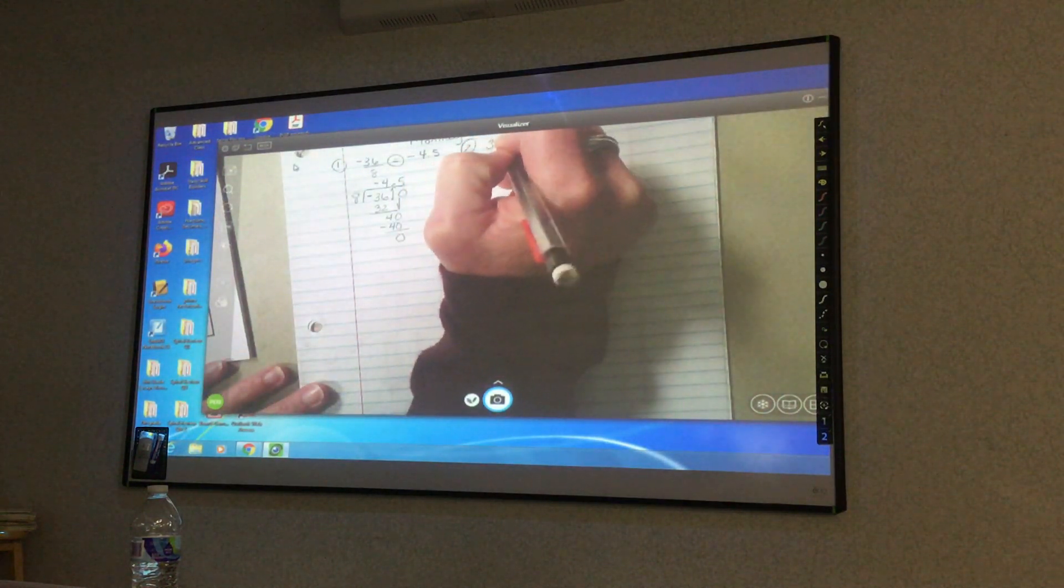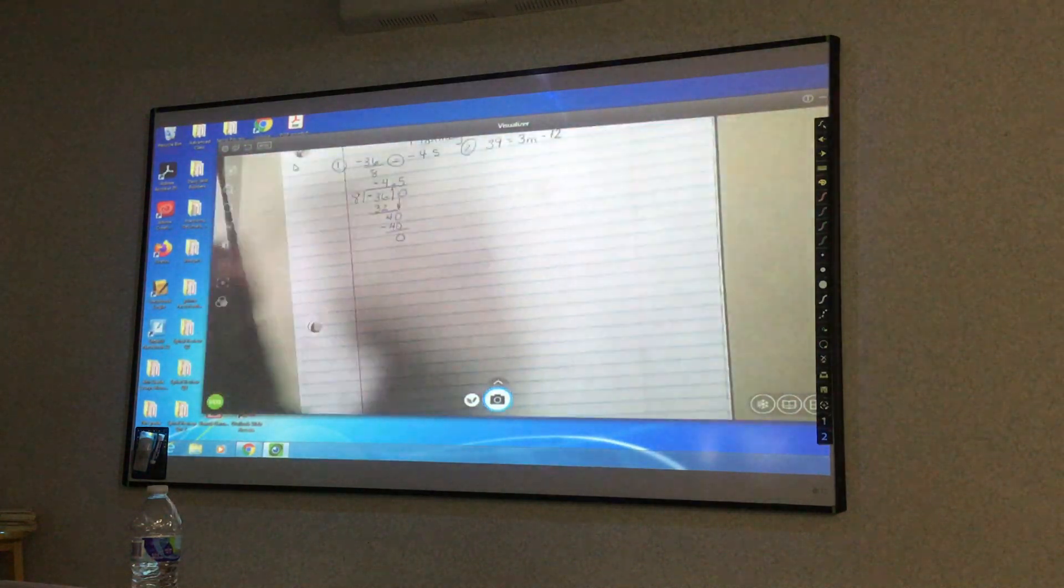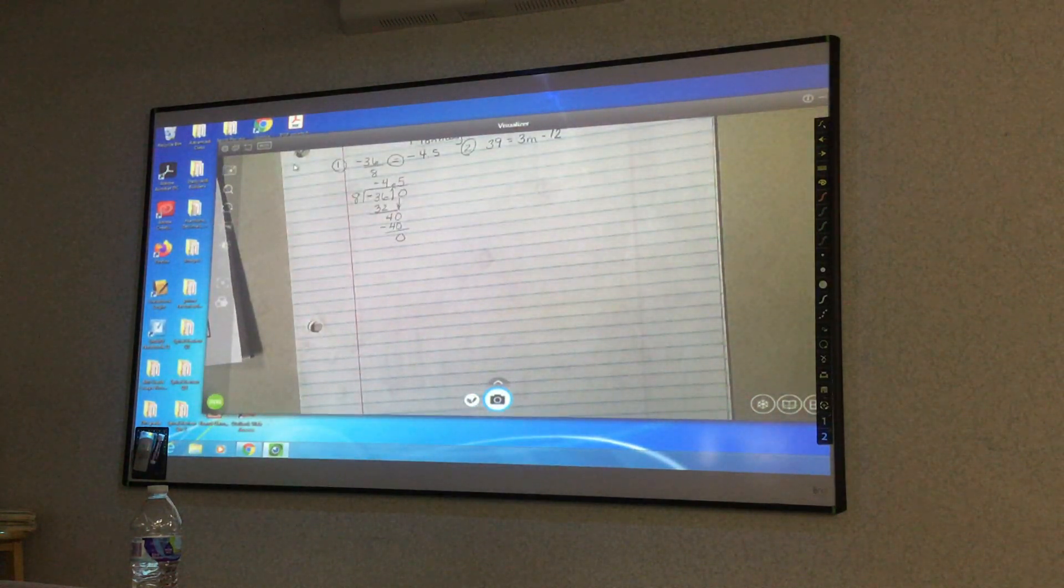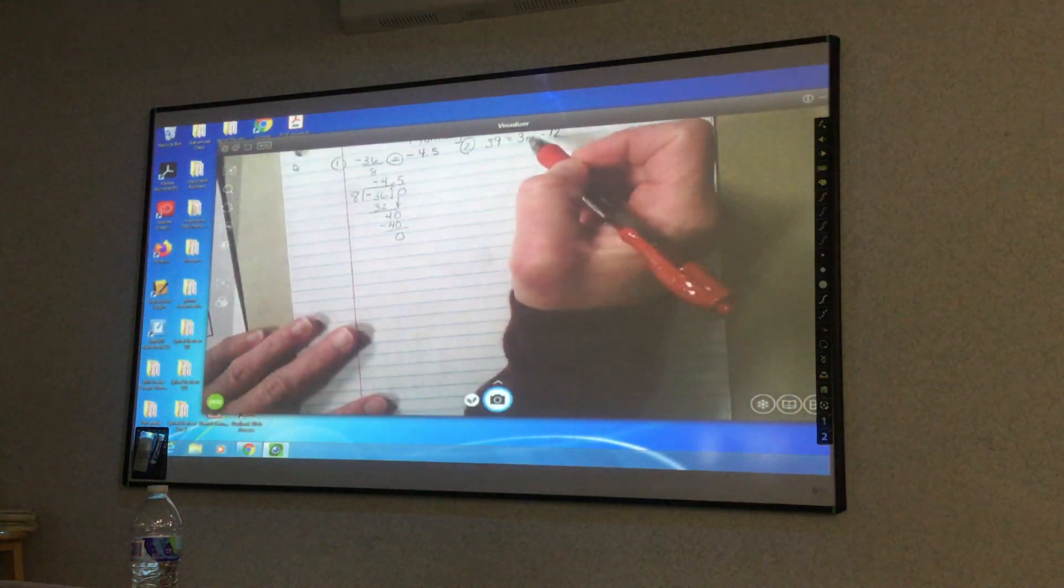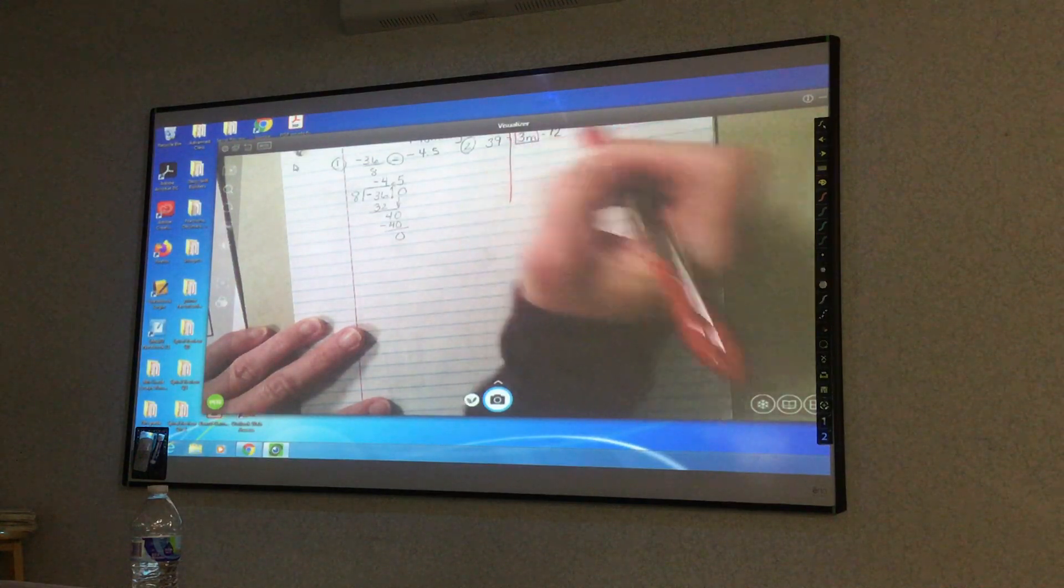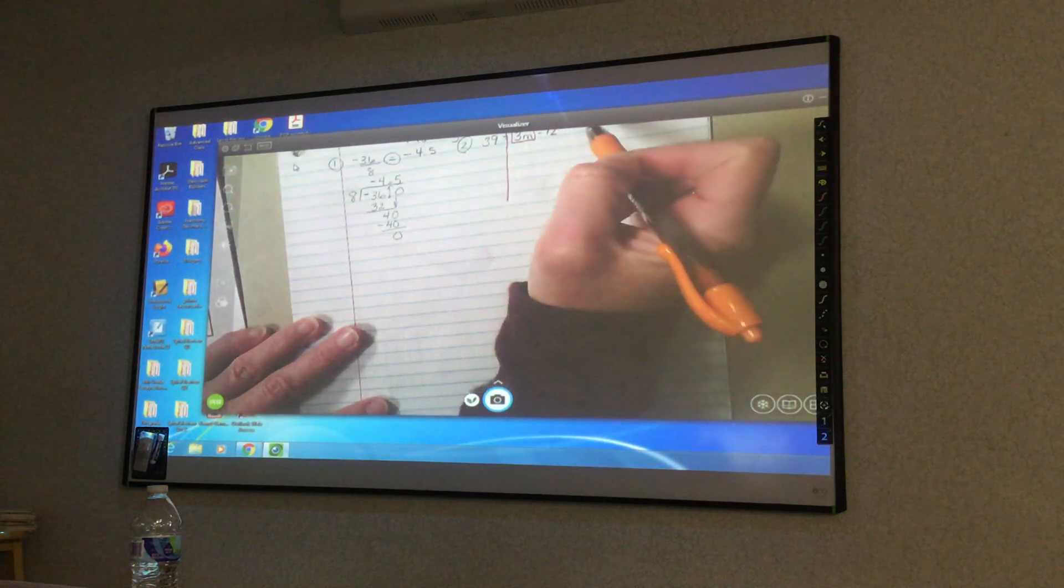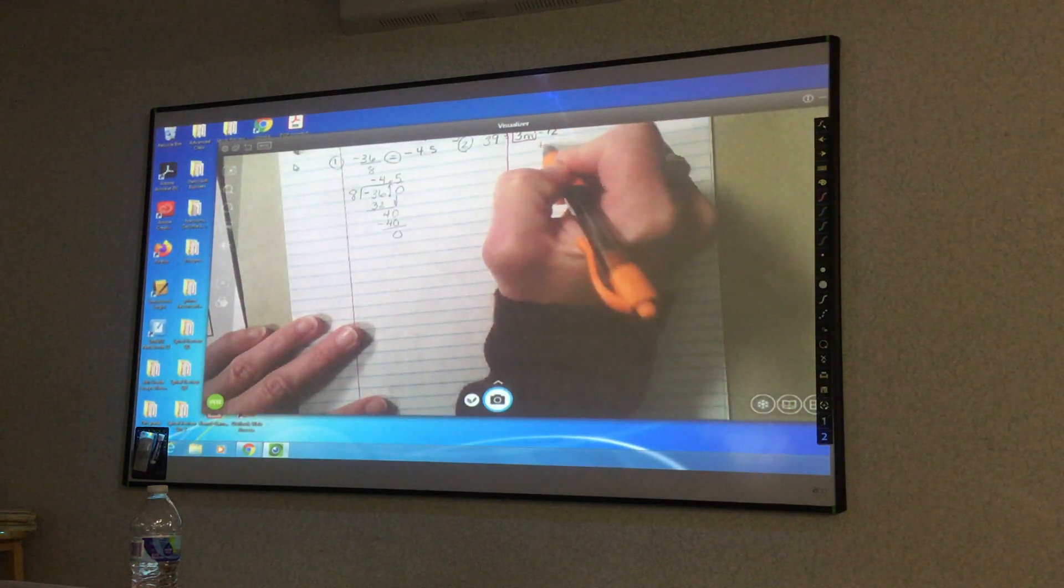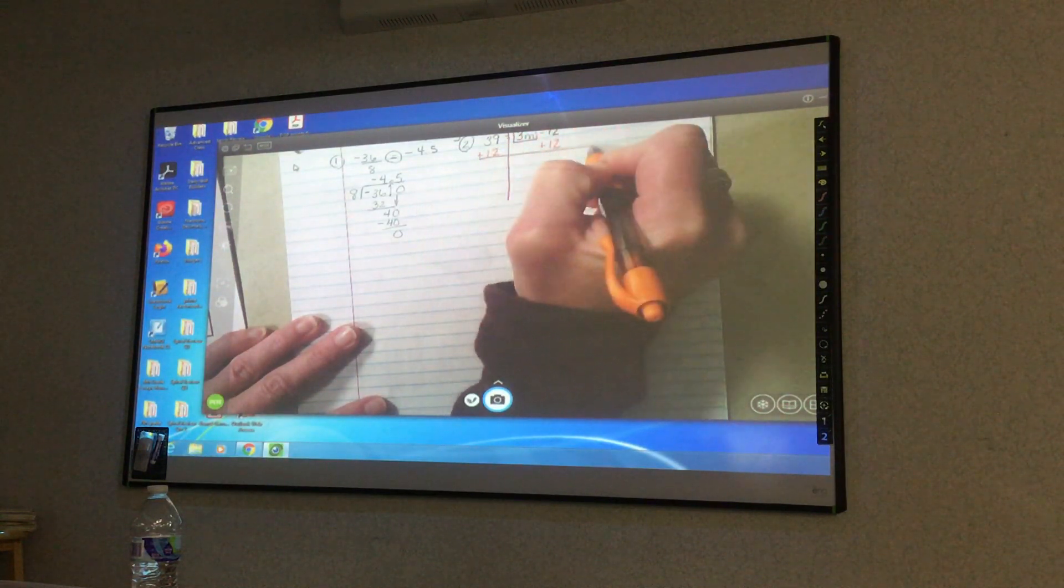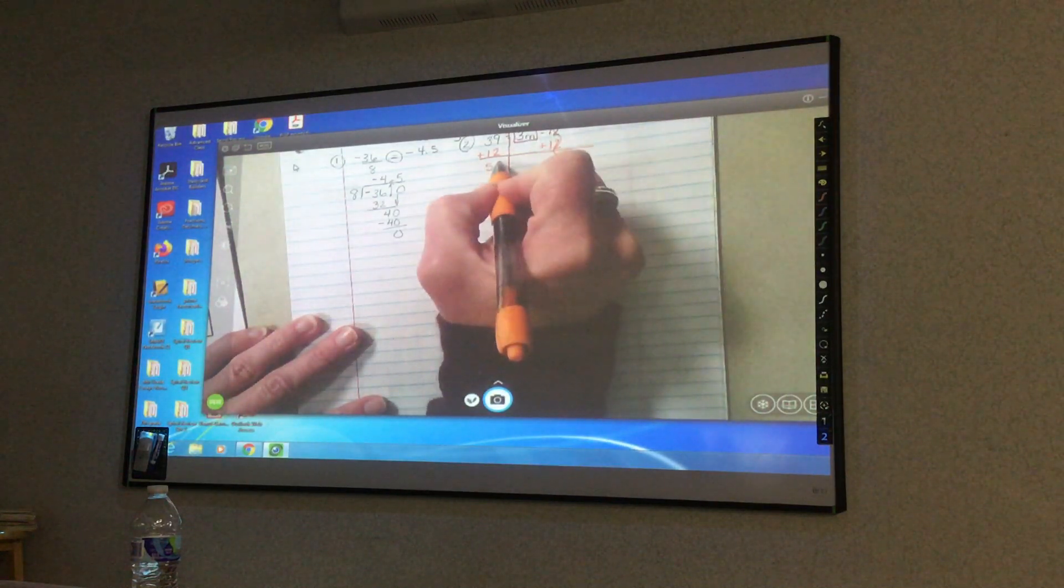39 equals 3m minus 12. At this point, you should be able to do these. You're going to draw your line. I'm going to box up my 3m because I'm not moving that. Now I am moving the negative 12, so it's going to be positive 12 on both sides. Those cancel each other out. 39 and 12 makes 51.